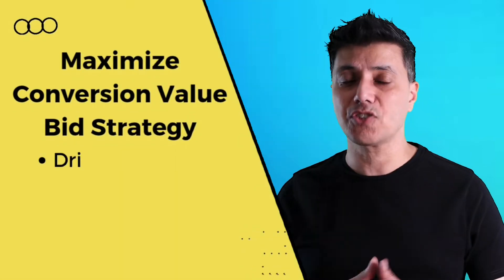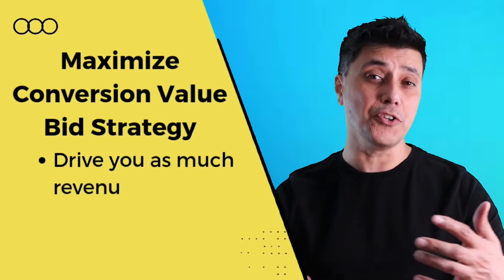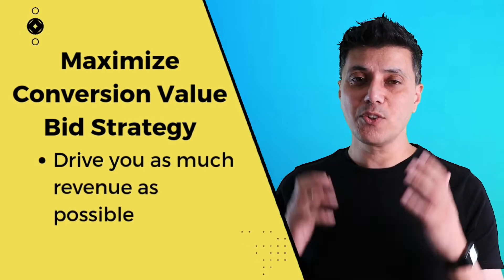Specify a lower cost per acquisition and let it run for two weeks to see how it goes. Now, how does the maximize conversion bid strategy differ from the maximize conversion value bid strategy? Your maximize conversion value bid strategy will attempt to drive you as much revenue as possible. In order to use this bid strategy, you've got to make sure not only that you have your tracking installed, but that you've got your revenue data fed into Google, so Google knows the value of each conversion.